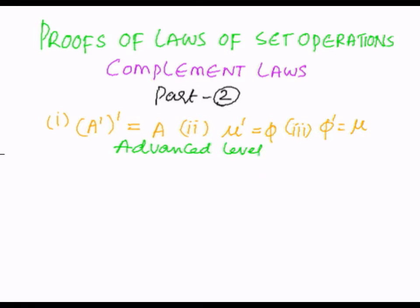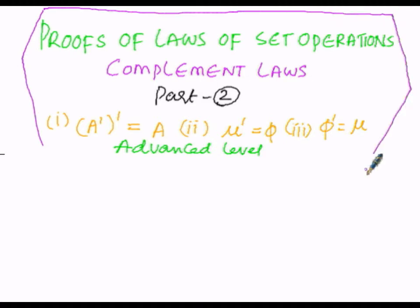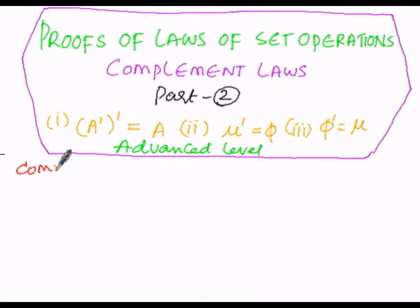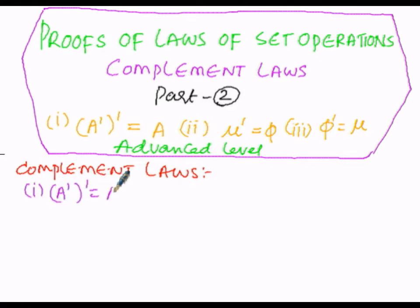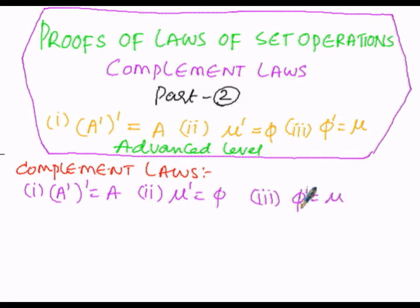In order to prove these conditions, first you have to assume a set A. You must know the formula of the complement of that set A, which is given by μ minus A — that is, set A is subtracted from the universal set μ. The three complement laws are: (A')' = A, μ' = φ, and φ' = μ. We are going to prove these 3 conditions by means of element-wise proof.